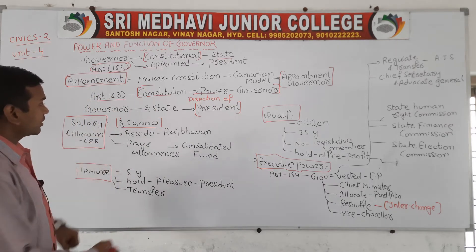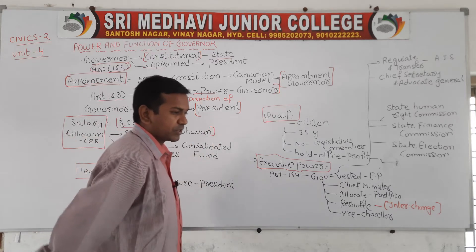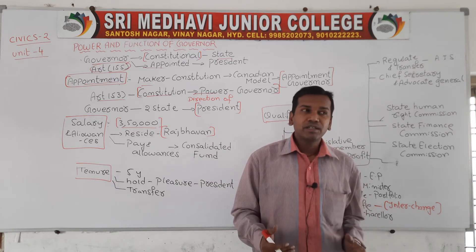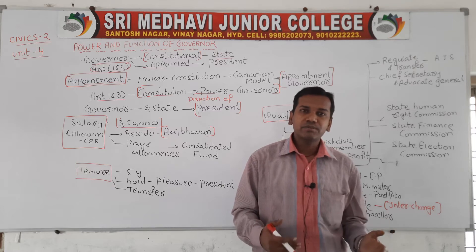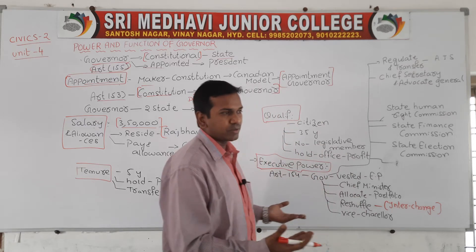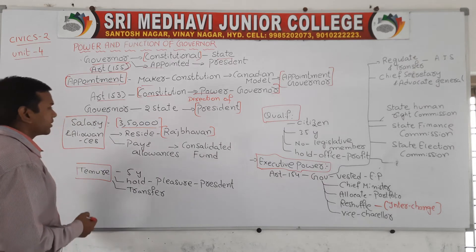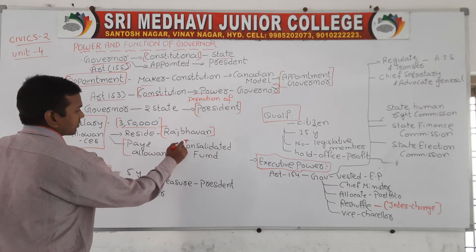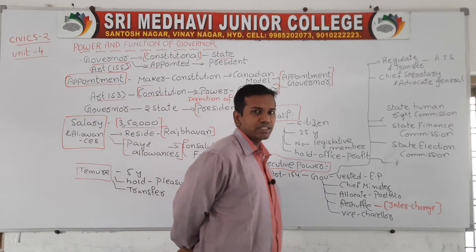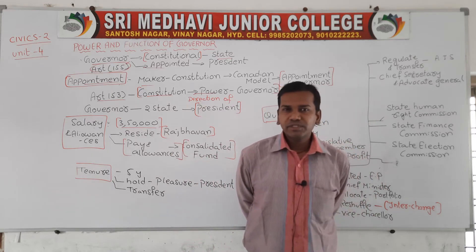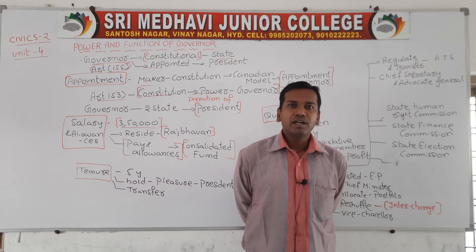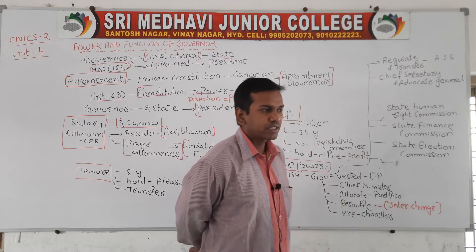The Governor is also given a residence called Raj Bhavan, where all types of living facilities are provided. The pays and allowances of the Governor are given from the Consolidated Fund of India, which the central government maintains. Most of the allowances paid to the Governor come from the Consolidated Fund of India.